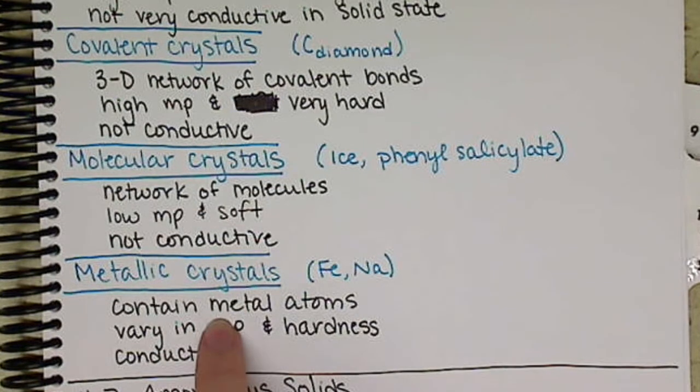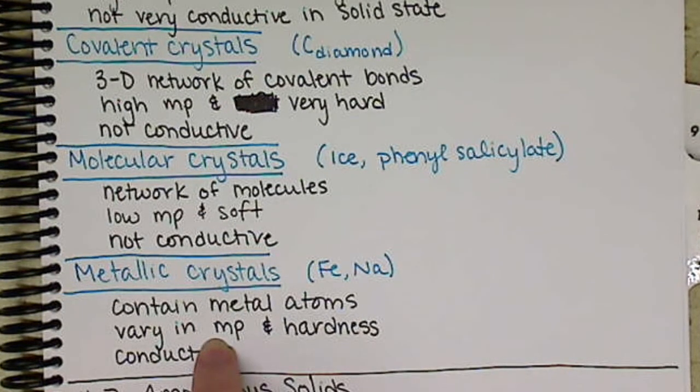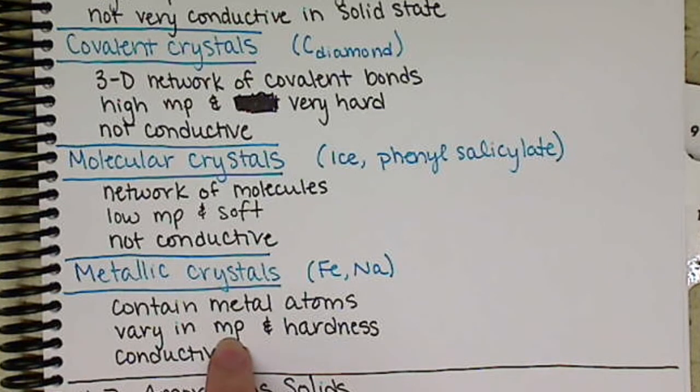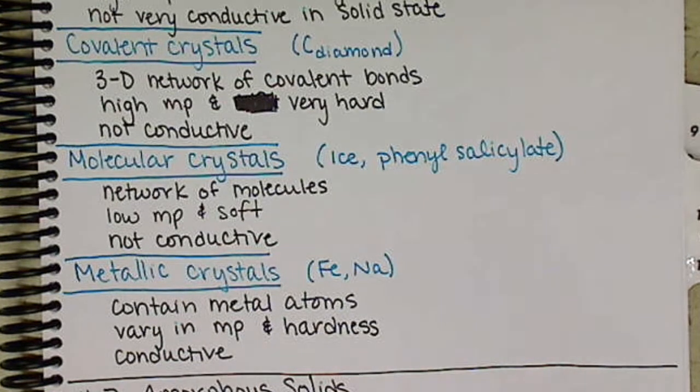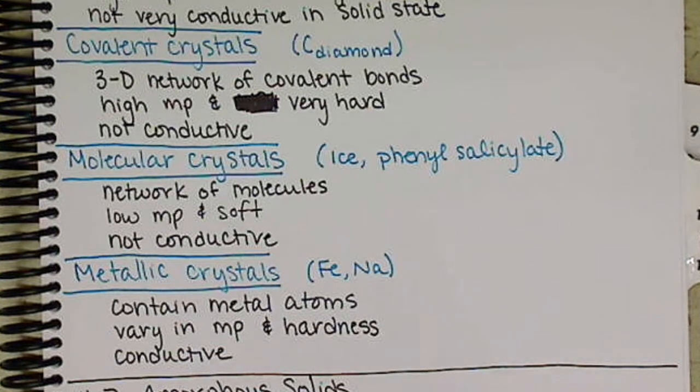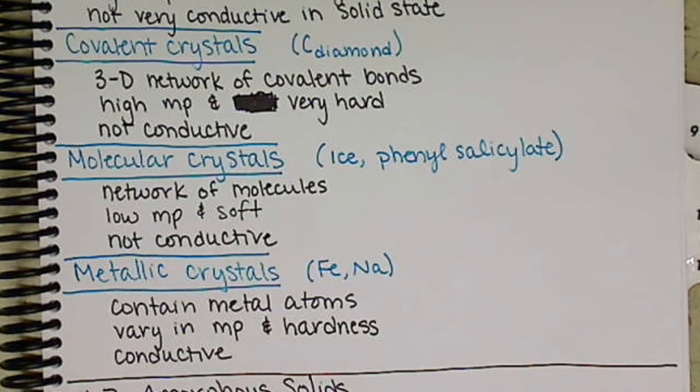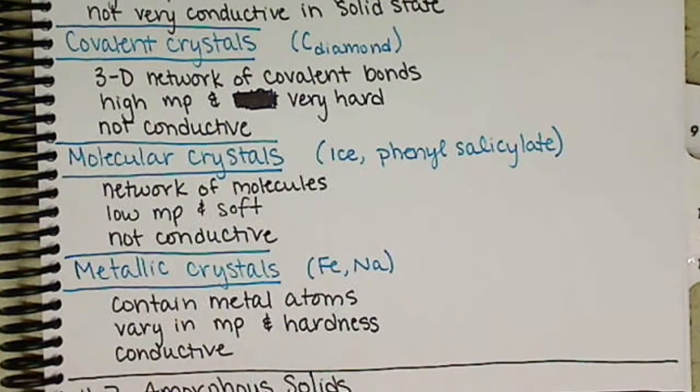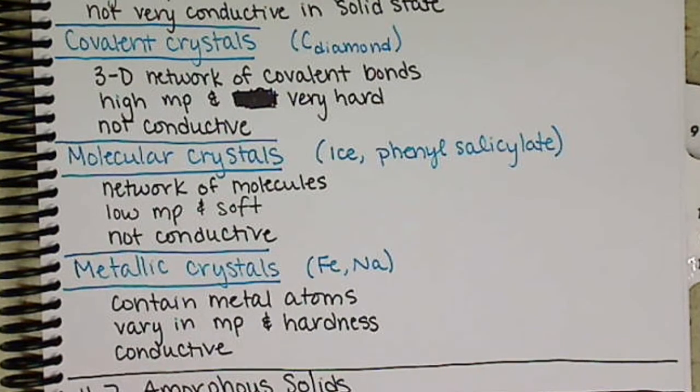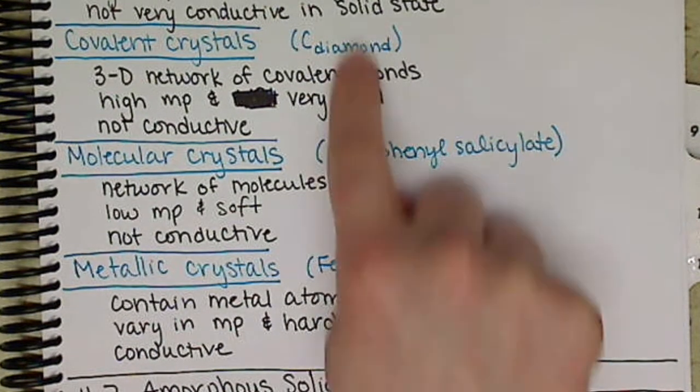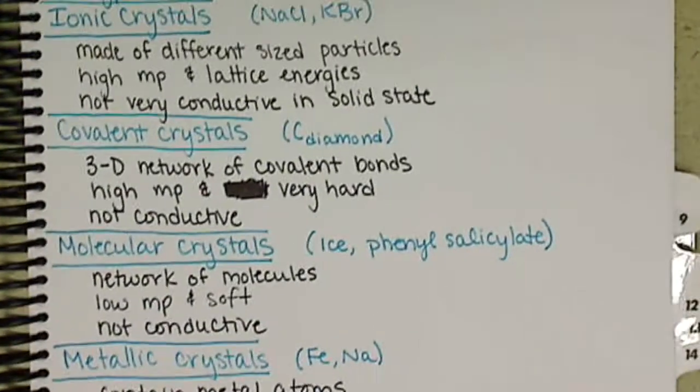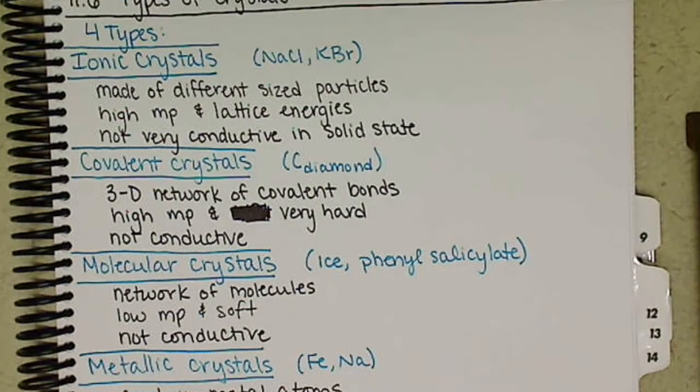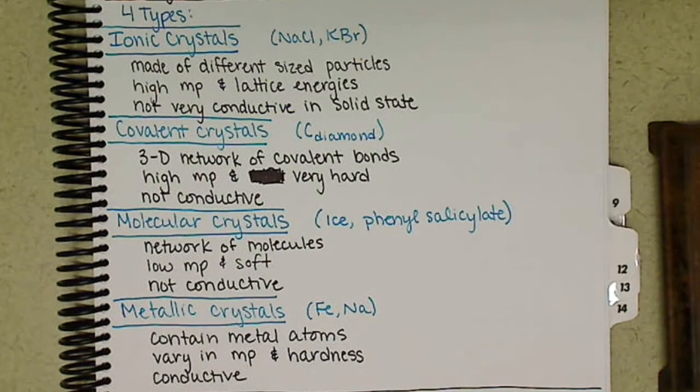Metallic crystals contain metal atoms. They are very varying in melting points. So we can have high ones, low ones, all the way in between. But they do have a varying hardness as well. The thing that changes for metallic crystals versus any of the other crystals is they are conductive. In parentheses, I've given some examples of the types of crystals. You will need to be able to identify between these types of crystals given a set of characteristics.